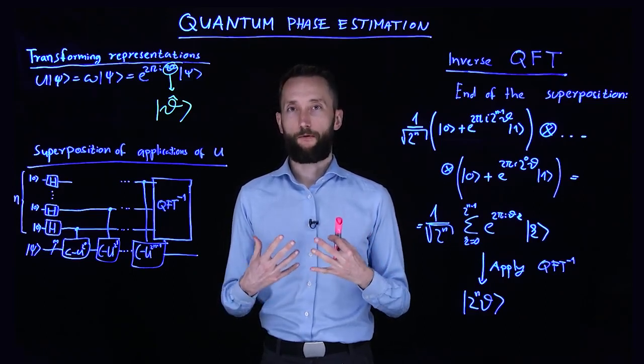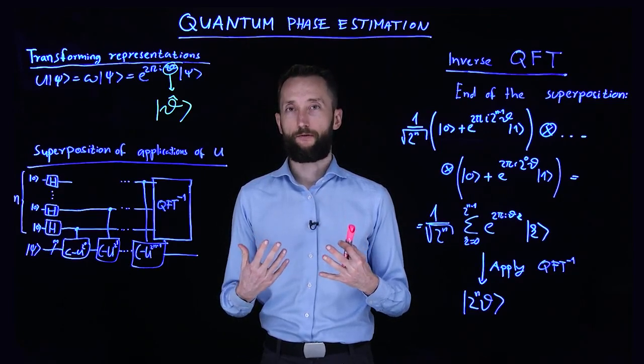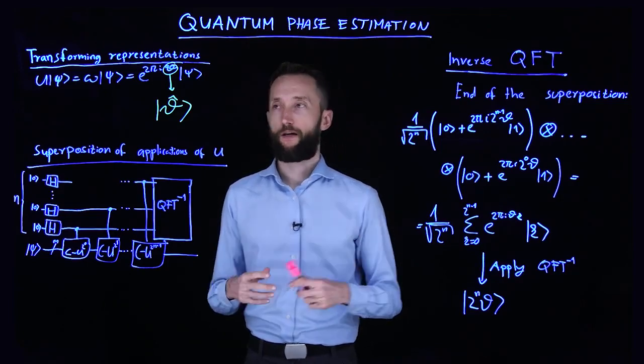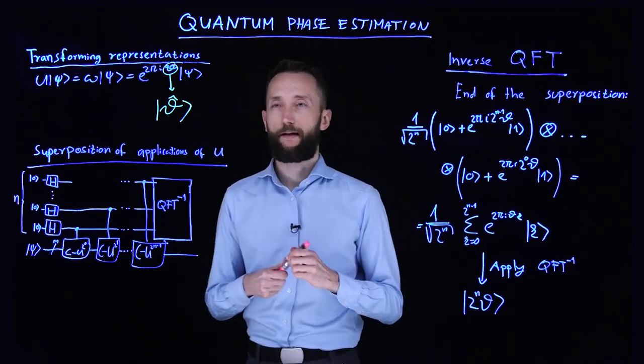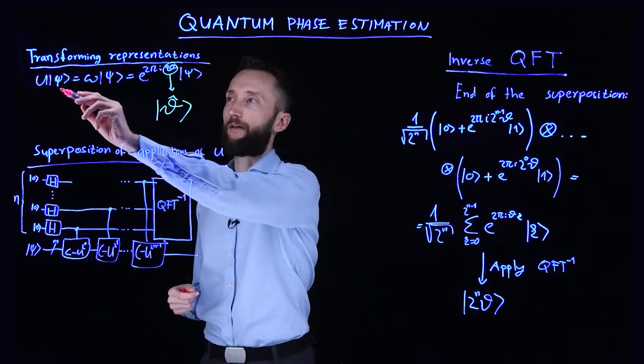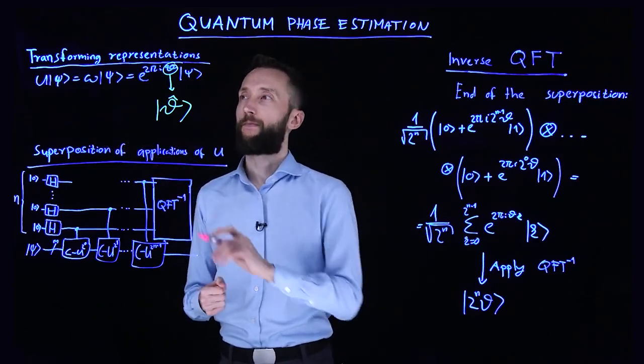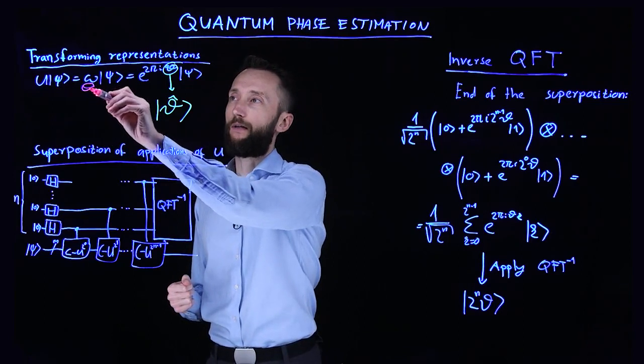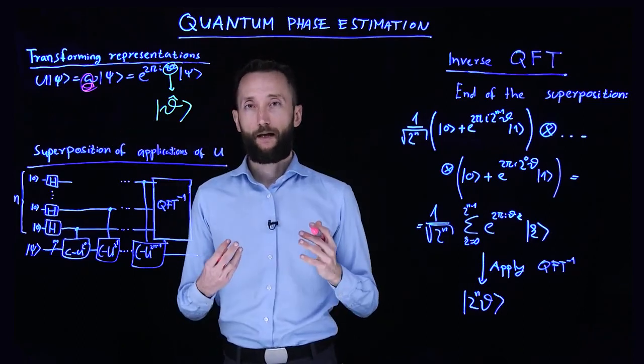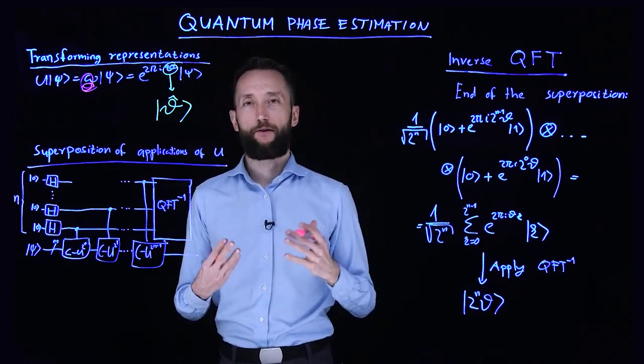In quantum phase estimation, we want to estimate the eigenvalues of some unitary operator. Given a unitary operator and one of its eigenvectors, we can identify its corresponding eigenvalue. Since this is a unitary operator, all of its eigenvalues lie on the complex unit circle.